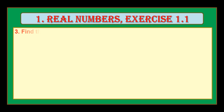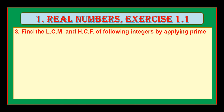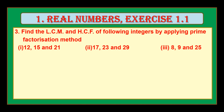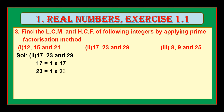Now let us solve the second bit of Question 3: 17, 23 and 29. Here, 17 is already a prime number, so you can write 17 as 17 itself. Similarly, 23 can be written as 1 into 23, and 29 as 1 into 29. Like this, we divided 17, 23 and 29 into their factors.